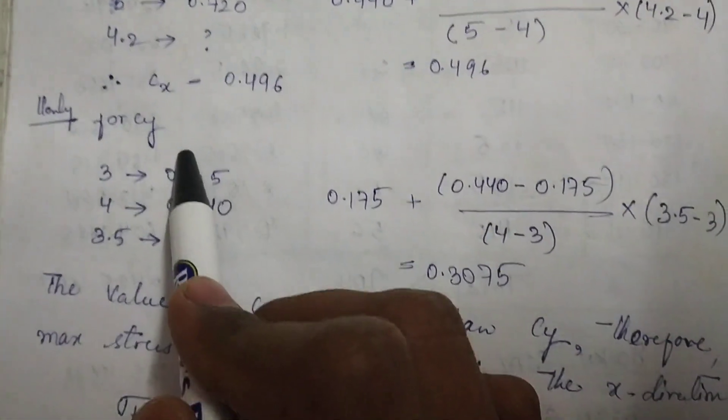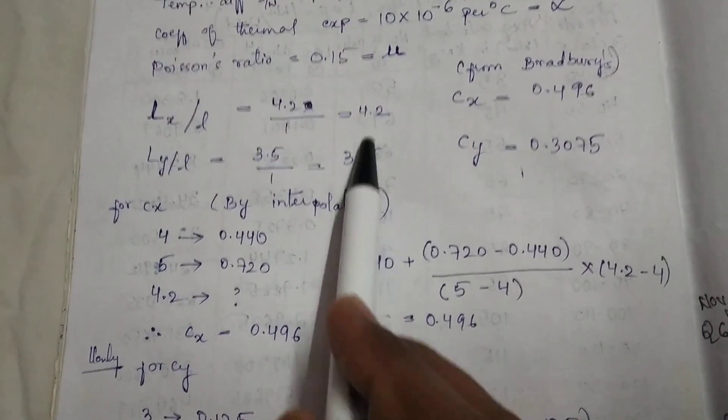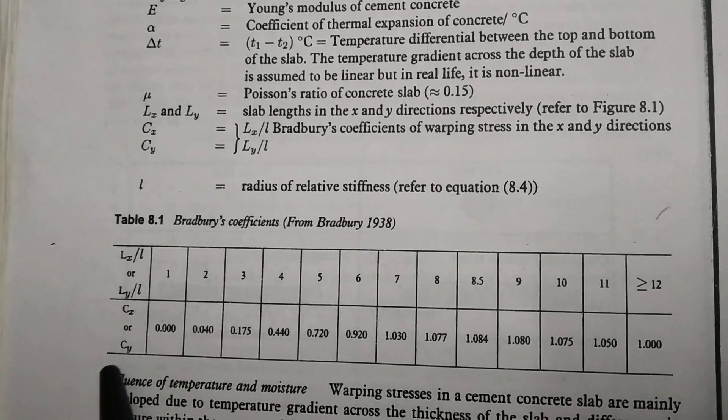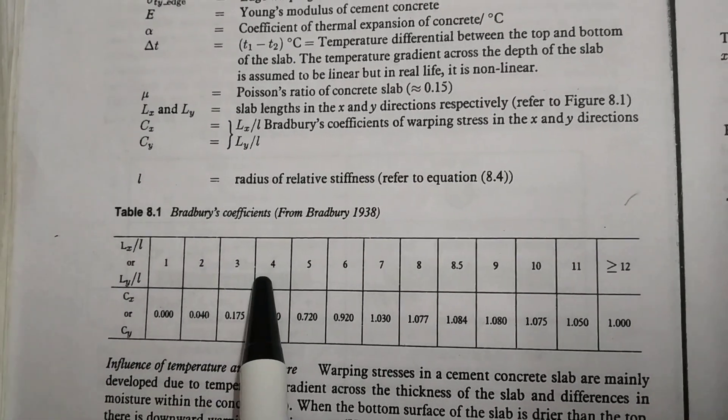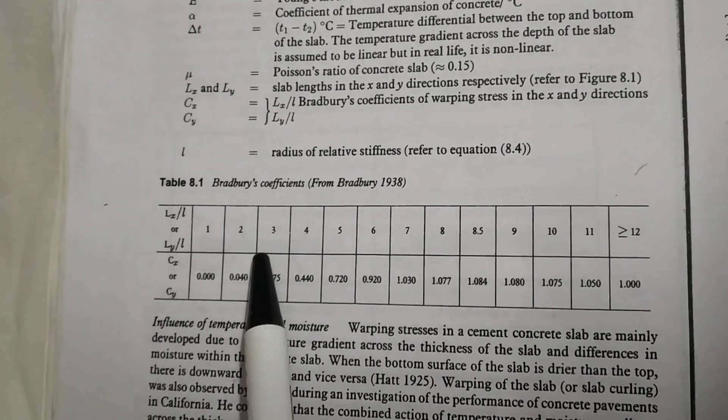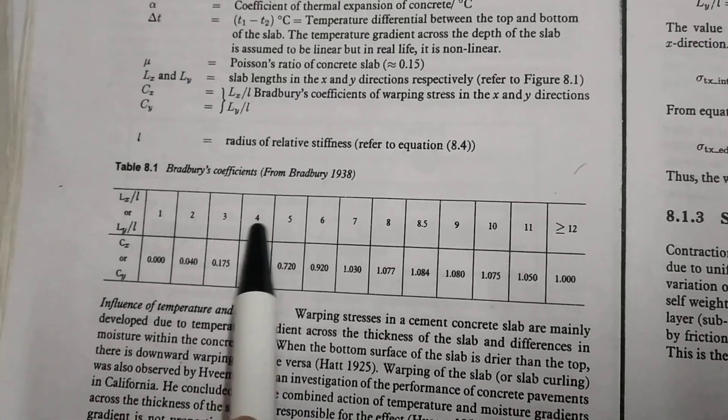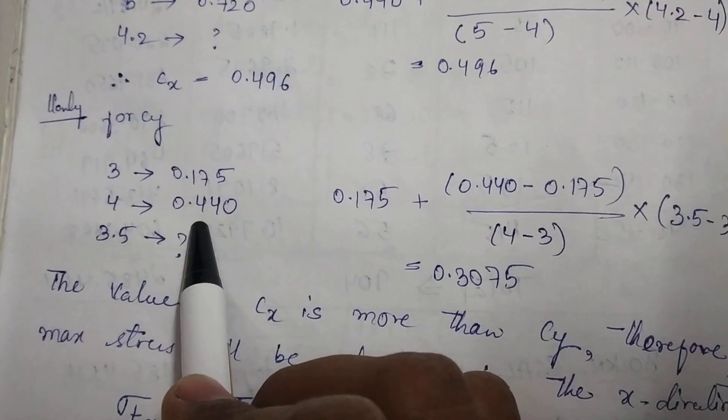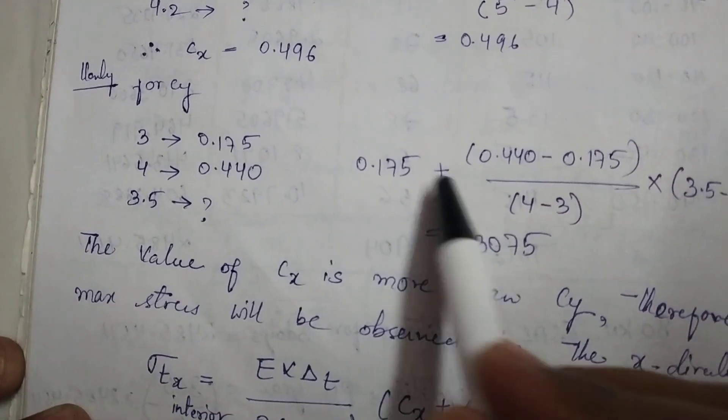Similarly, we calculate Cy. Since Ly/l = 3.5 lies between 3 and 4, we use Bradbury's table values: at Ly/l = 3, Cy = 0.175; at Ly/l = 4, Cy = 0.440. Using interpolation like we did for Cx, we obtain the value for Cy at 3.5.